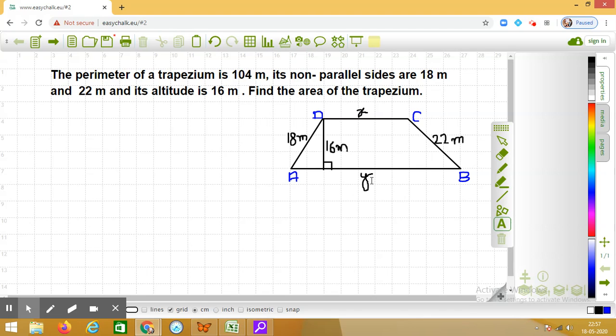Now, in this question, we have to find the area of the trapezium. You know that area of the trapezium is half into sum of the parallel sides into the distance between them. That means we have to find what is X plus Y first, the sum of the parallel sides.